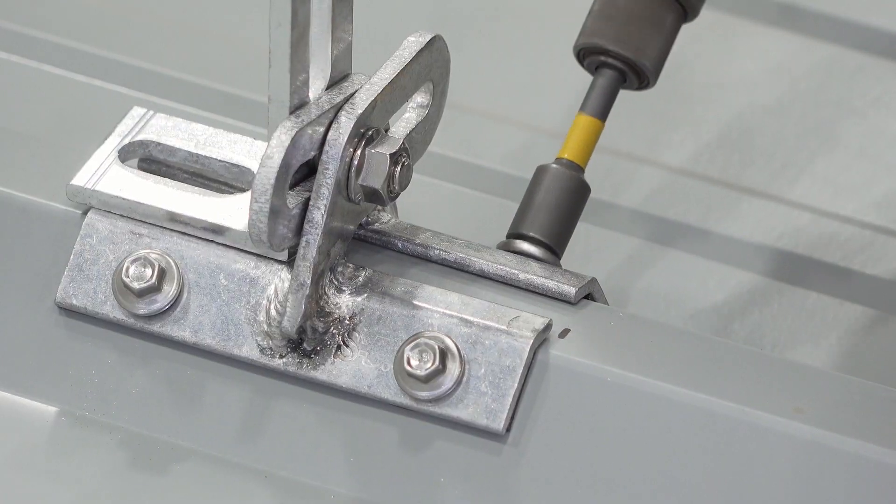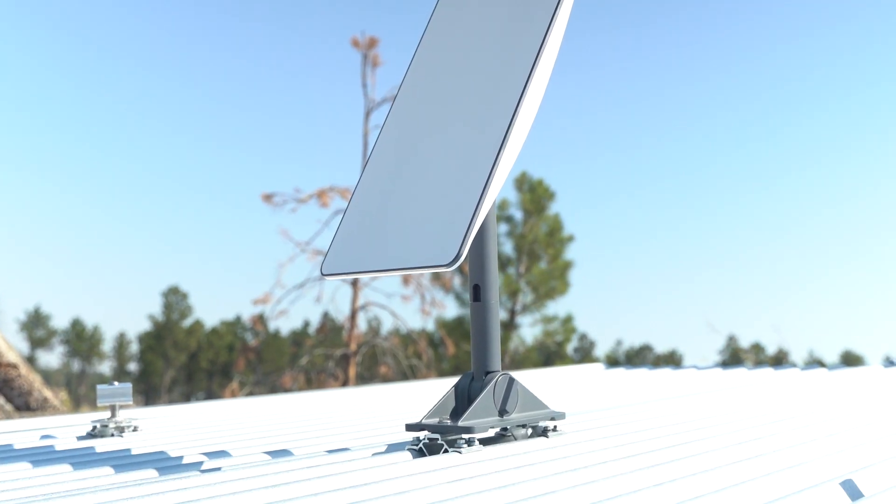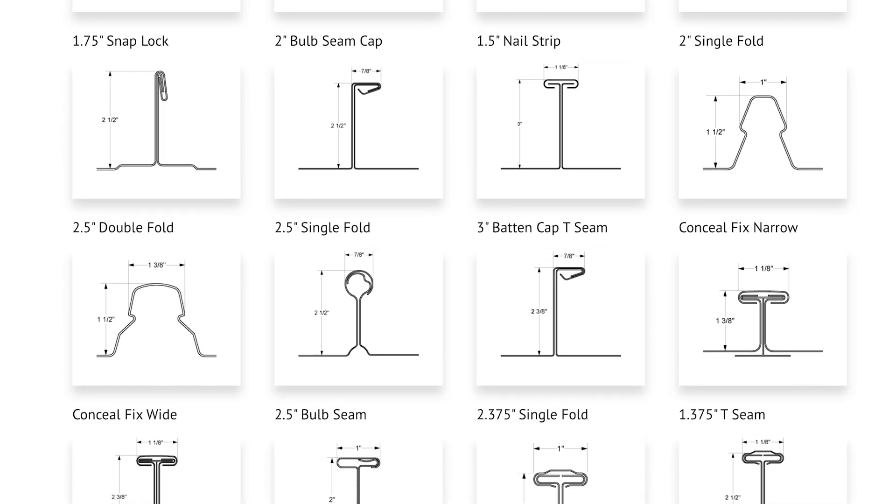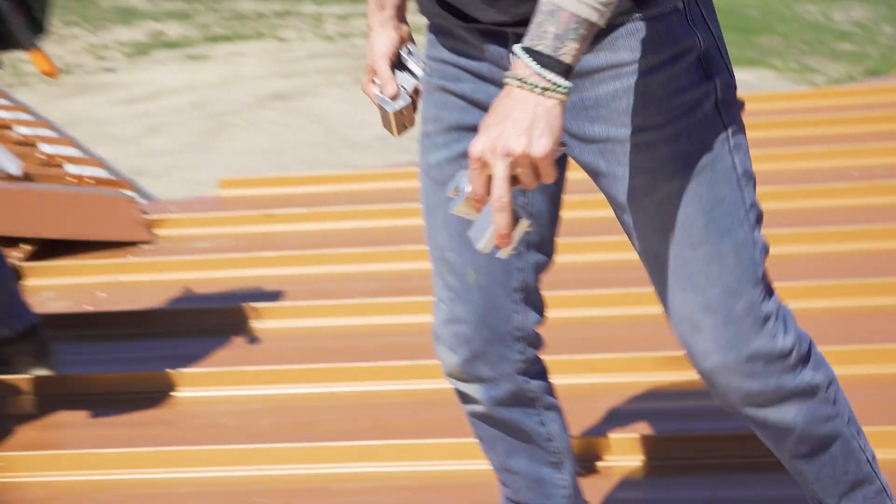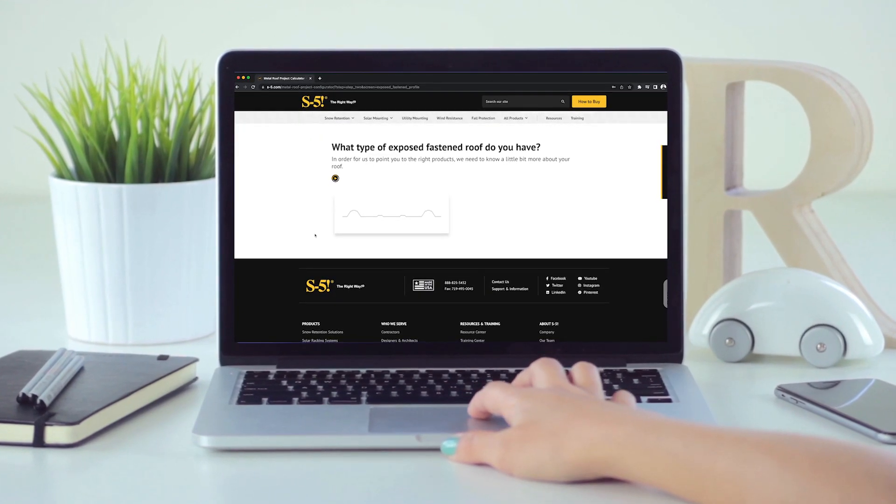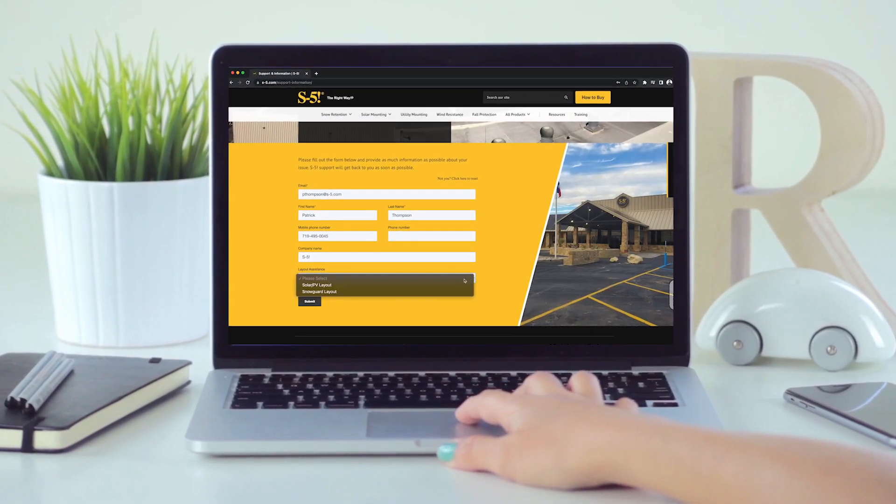S5 clamps and brackets are a fantastic way to mount a wide variety of rooftop accessories, but with so many different metal roofing profiles out there in the market, it's important to find the product that's right for you. So let's take a look at three ways you can figure this out using s-5.com.